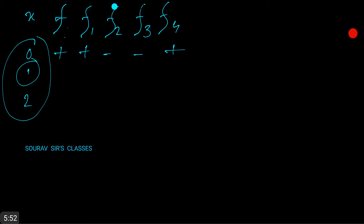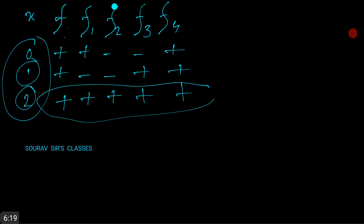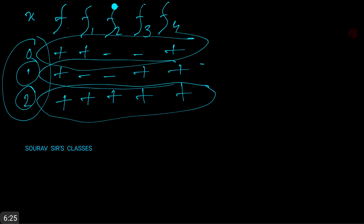When x = 1, f is positive, f1 is negative, f2 is negative, f3 is positive, and f4 is positive. When x = 2, all values — f, f1, f2, f3, and f4 — are all positive. Just plug in the values and create this table; it will be easier to visualize.